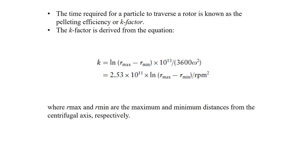The time required for a particle to traverse a rotor is known as the pelleting efficiency, or K factor. The K factor is calculated based on the maximum rotor speed and is a function of rotor design — different rotors have different K factors. The K factor provides a convenient means of determining the minimum residence time required for a pellet to separate, and it is very useful when comparing sedimentation time using different rotors.